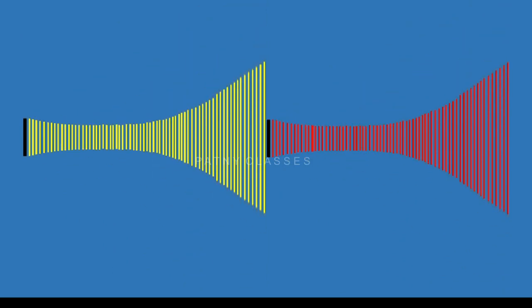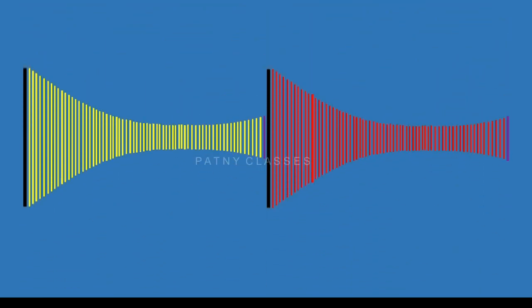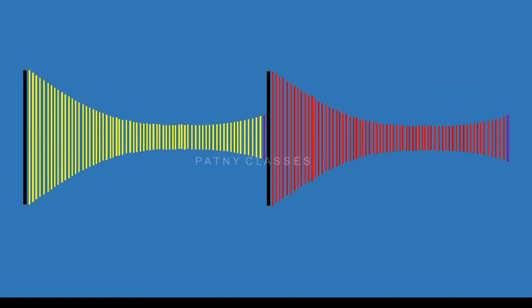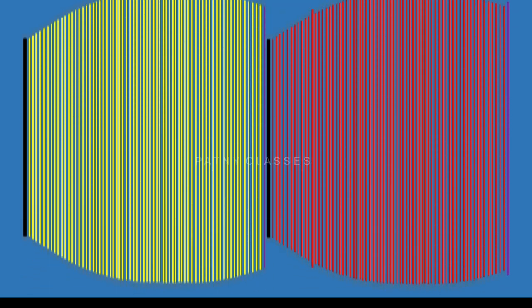So, the distance between both the black particles is called wavelength. Even the violet colored particles are also in the same state of vibration. Therefore, the physical distance between two violet colored particles also gives the wavelength.